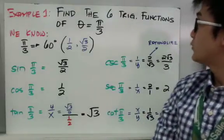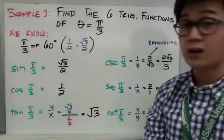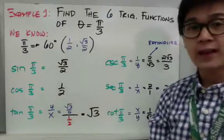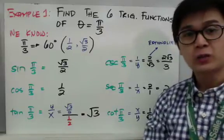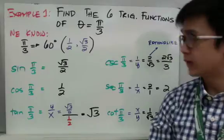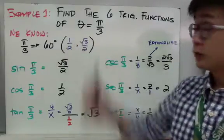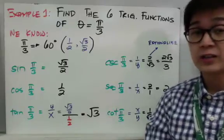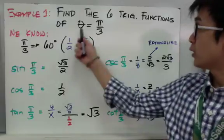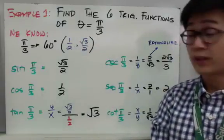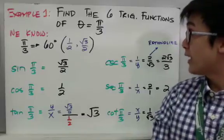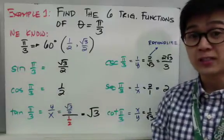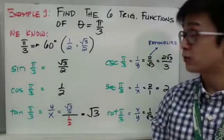In this example, we need to find the 6 trig functions of the given angle theta, which is π/3. In trigonometry, you will see this Greek letter most often — whereas in algebra we use x and y as variables, in trigonometry we use the Greek letter theta for a given angle. The given angle is π/3, and converting π/3 to degrees gives us 60°, which is one of the angles in the special right triangle.